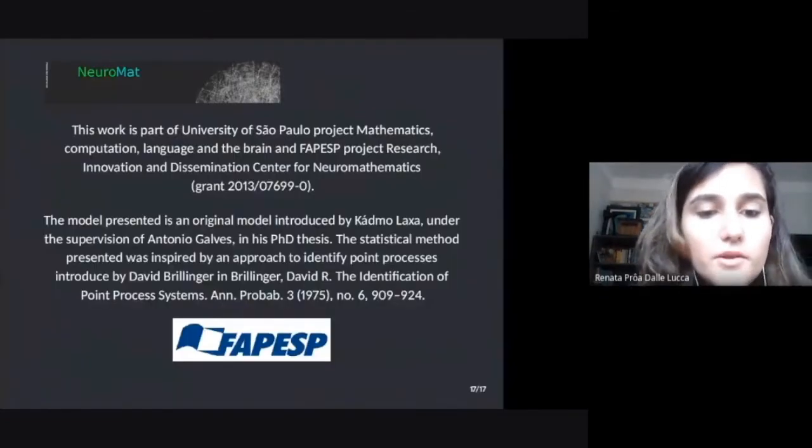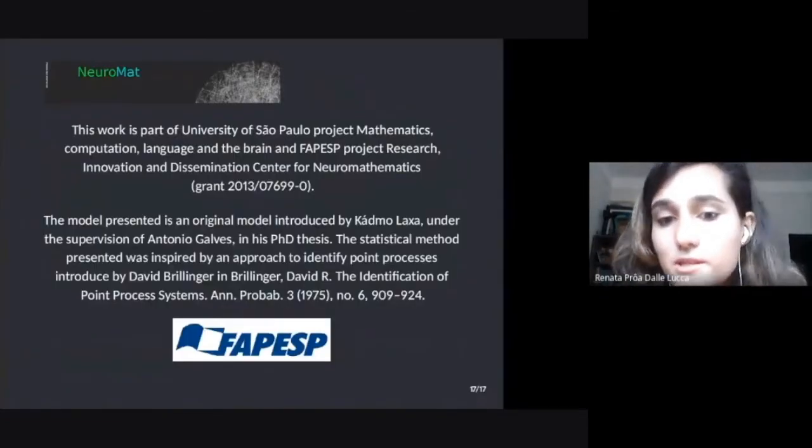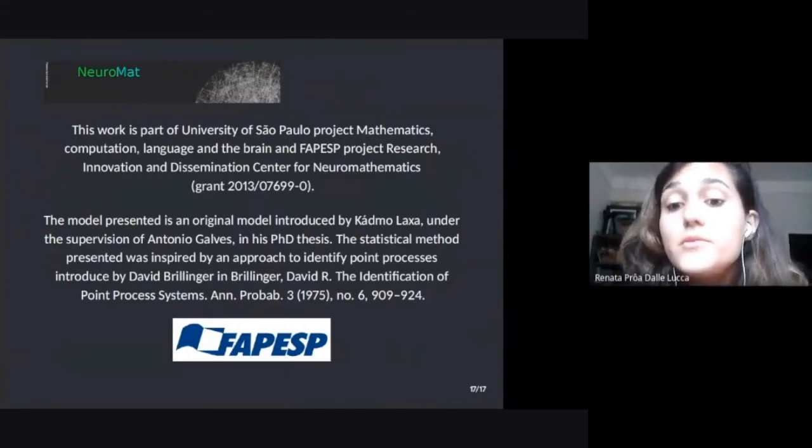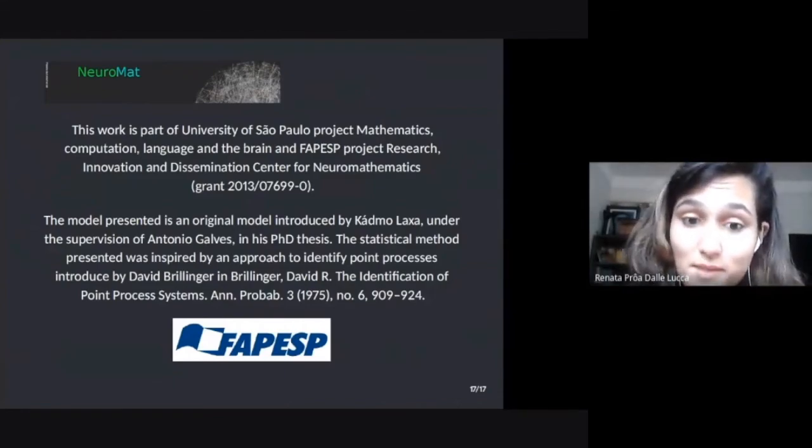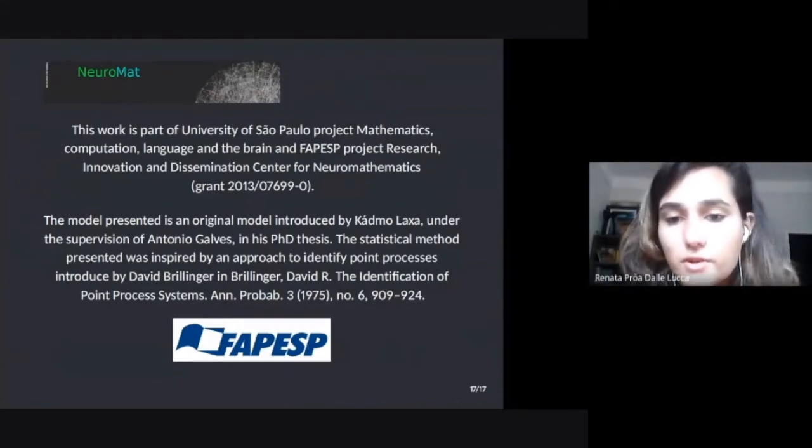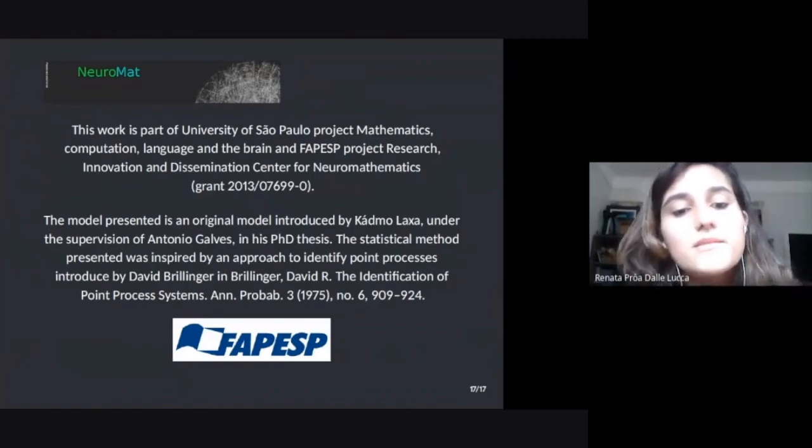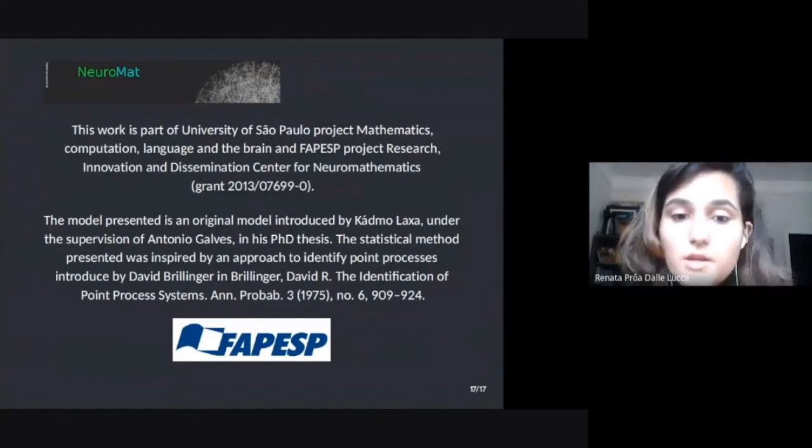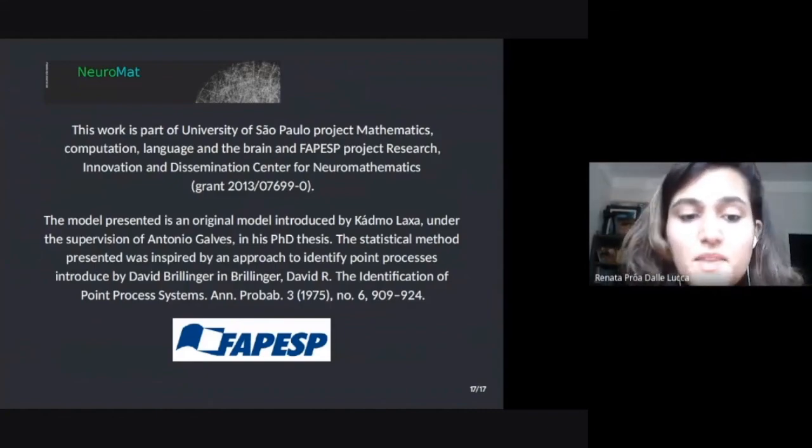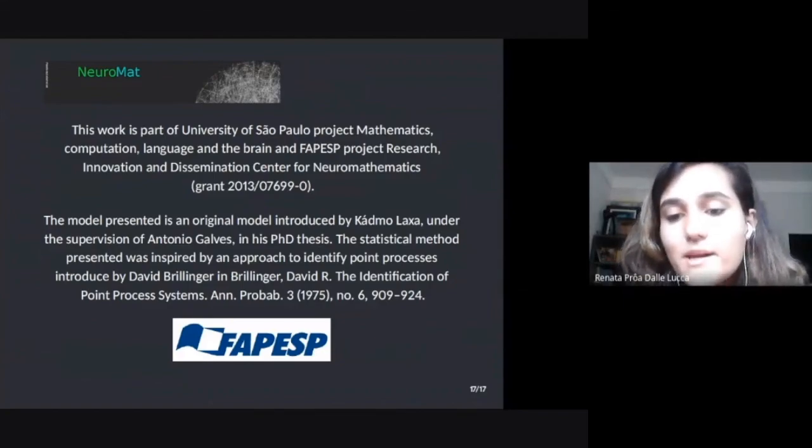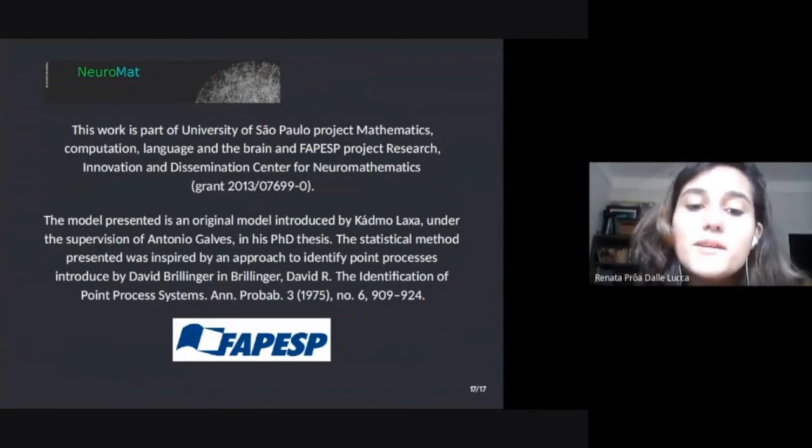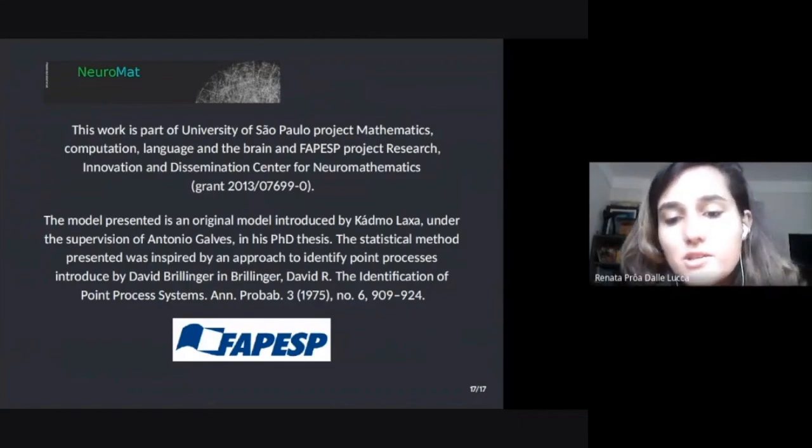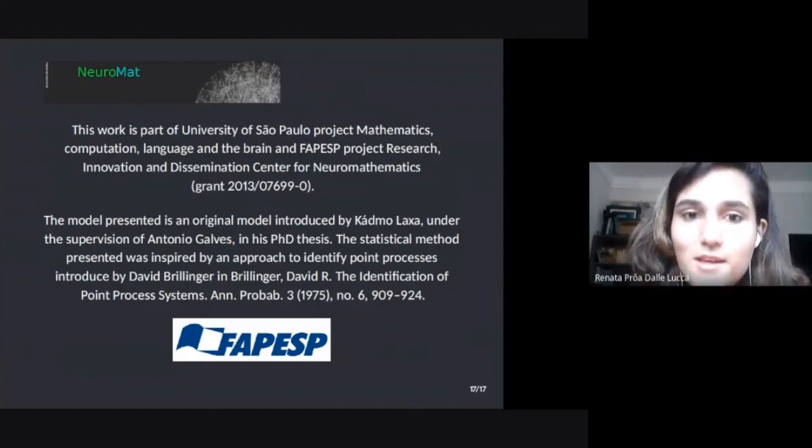So, this model of social network we used in this work is an original model introduced by Kajimo Lasha in his PhD thesis, under the supervision of Professor Antonio Galvis. And the method presented here was inspired by a method introduced by statistician David Brillinger to identify point processes. And this work is part of the University of São Paulo project, Mathematics, Computational Language, and the Brain, of the FAPESP project, Research, Innovation, and Dissemination Center for Neuromathematics. Thank you.